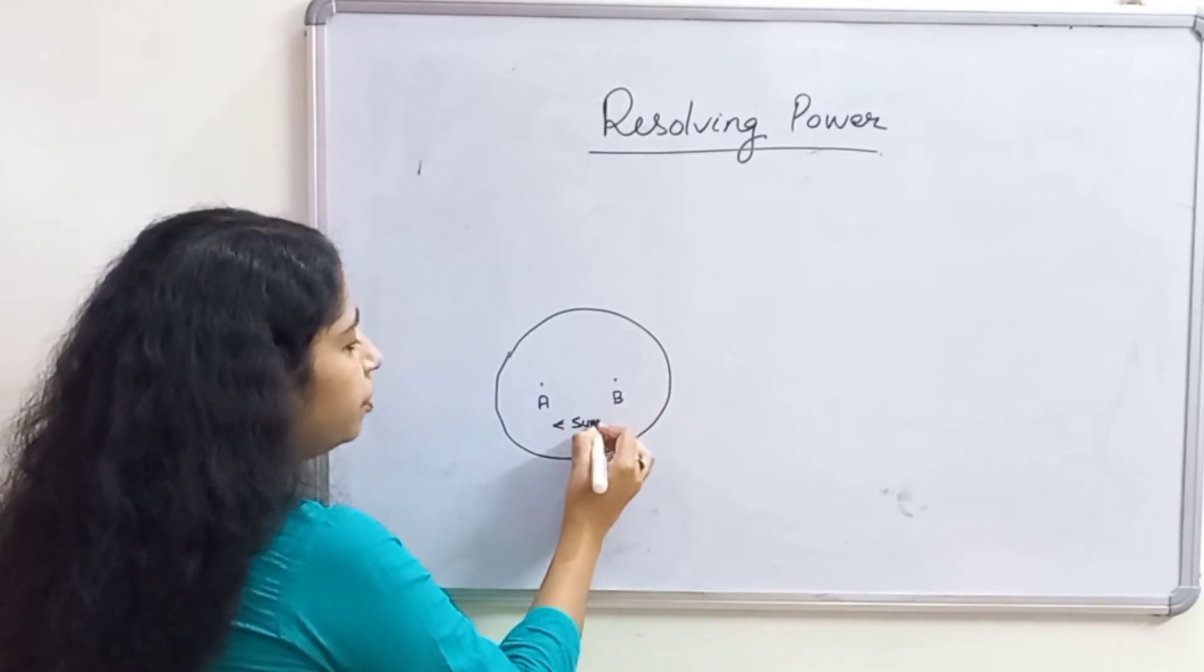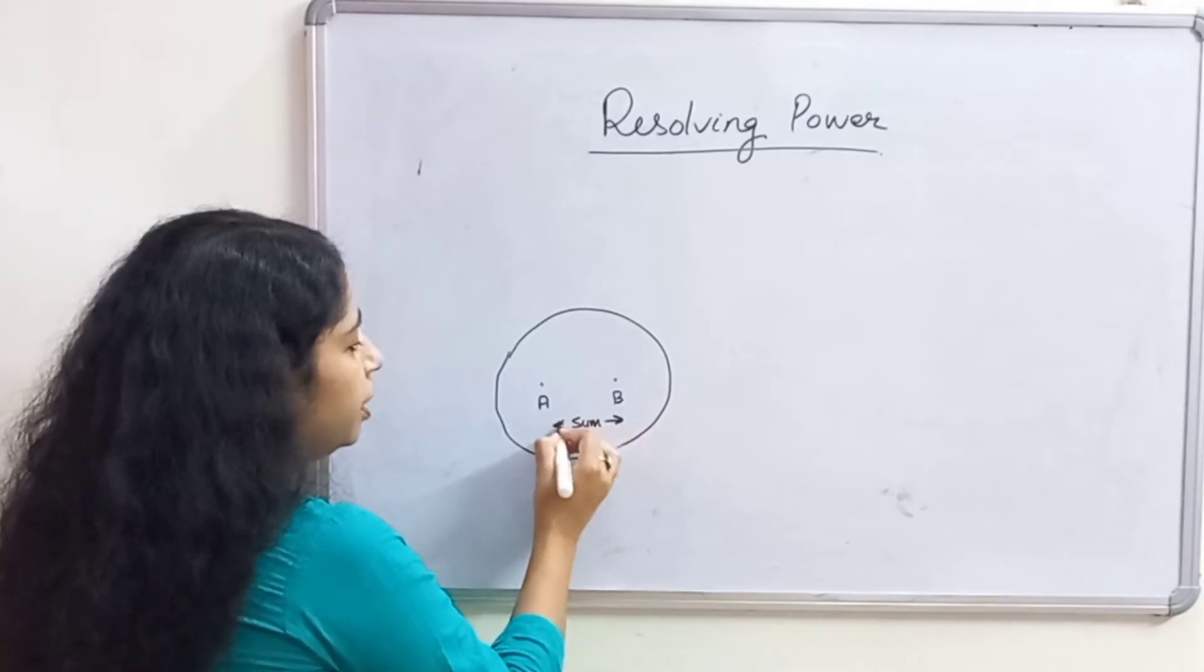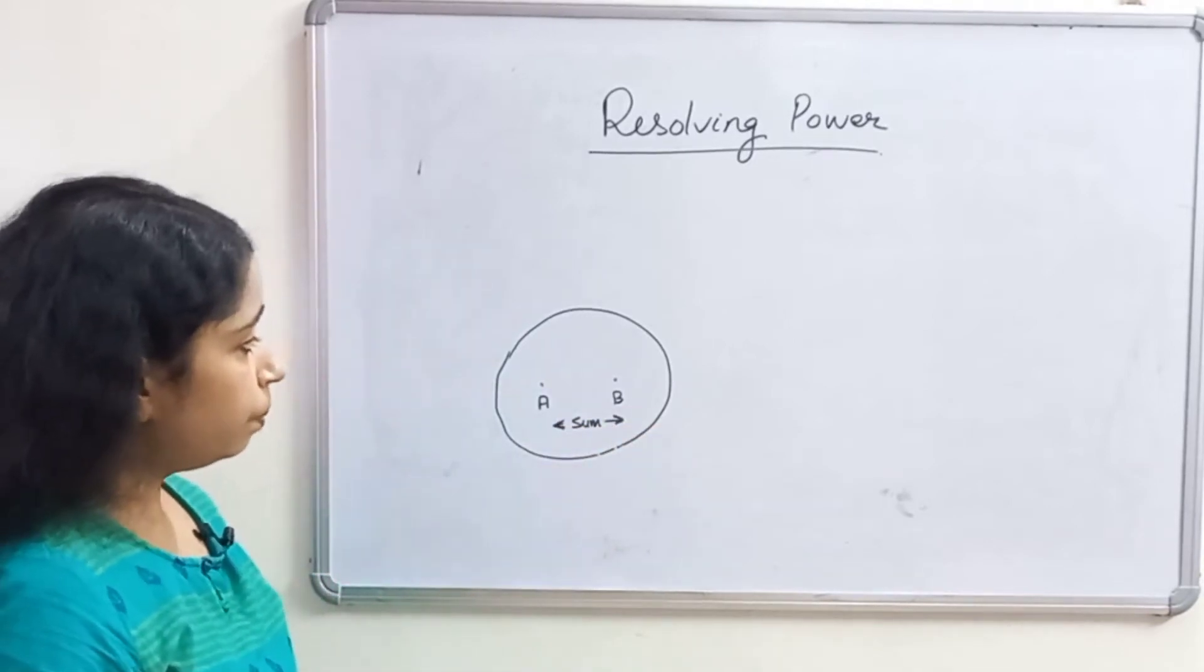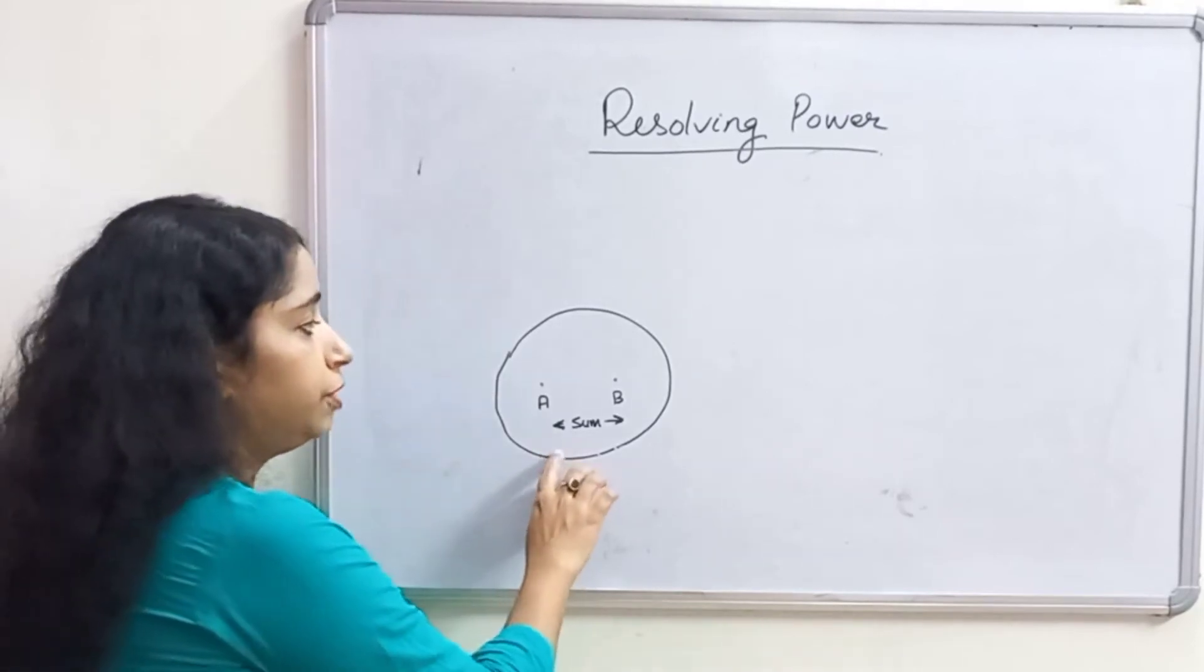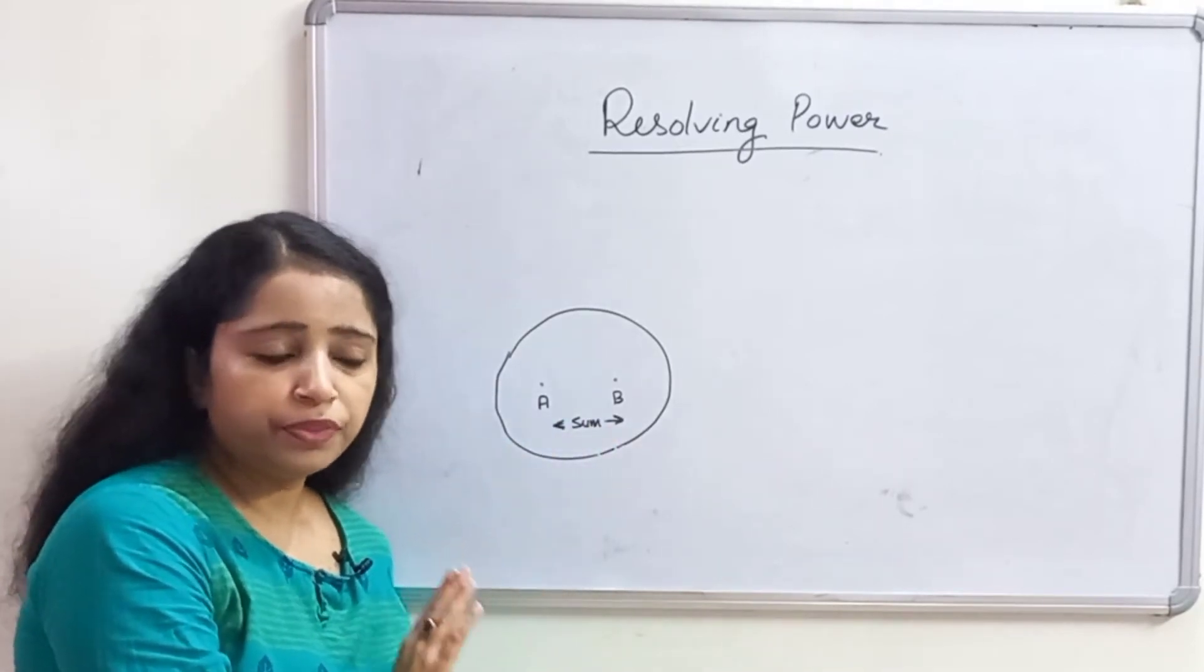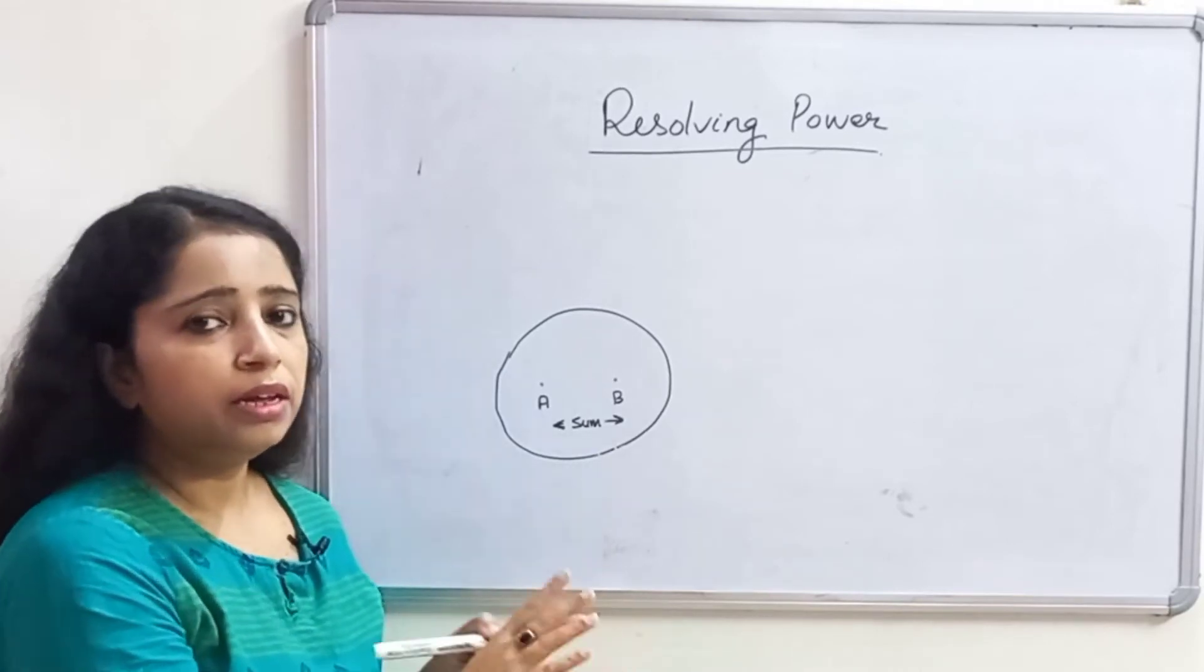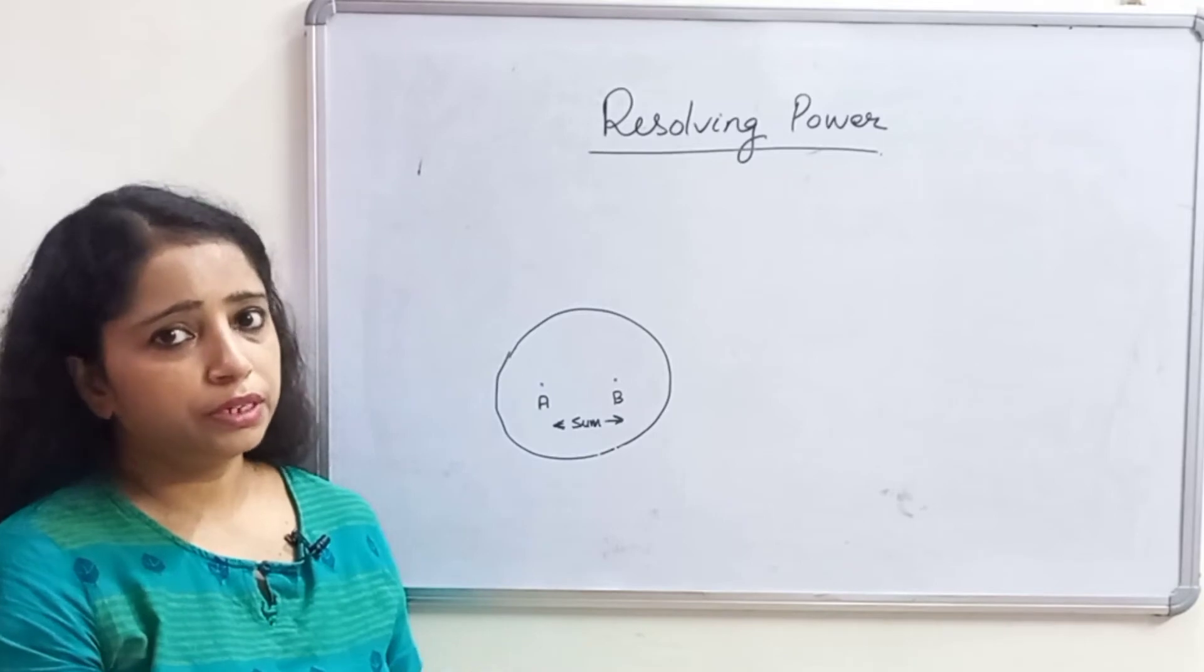Suppose they are 5 micrometer away from each other. I need a microscope which can dissolve between these two points. Now, here I am telling you how resolving bar is related to limit of resolution.